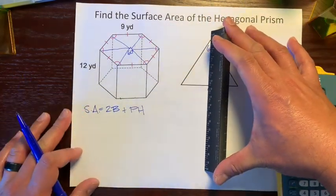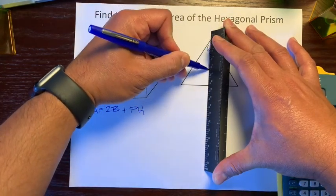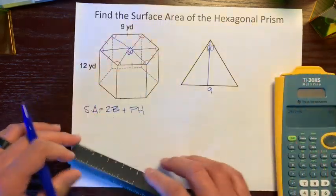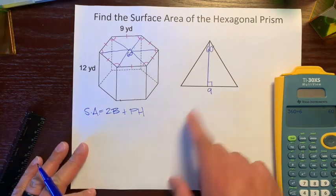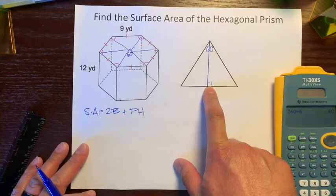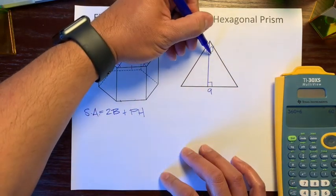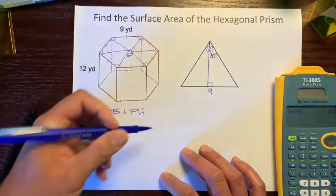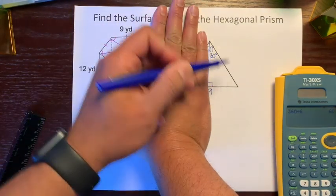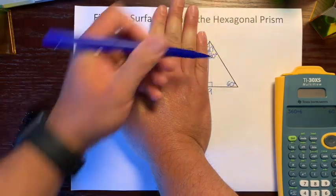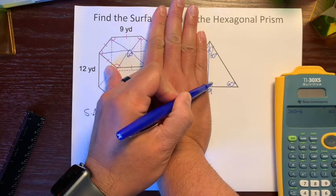Let's draw a line straight down that cuts this triangle in half, giving us perpendicular sides and a right angle. This line cuts the 60-degree central angle in half to make it 30 degrees. So this right triangle has a 90-degree angle and a 30-degree angle, which makes the third angle 60 degrees — a 30-60-90 triangle.